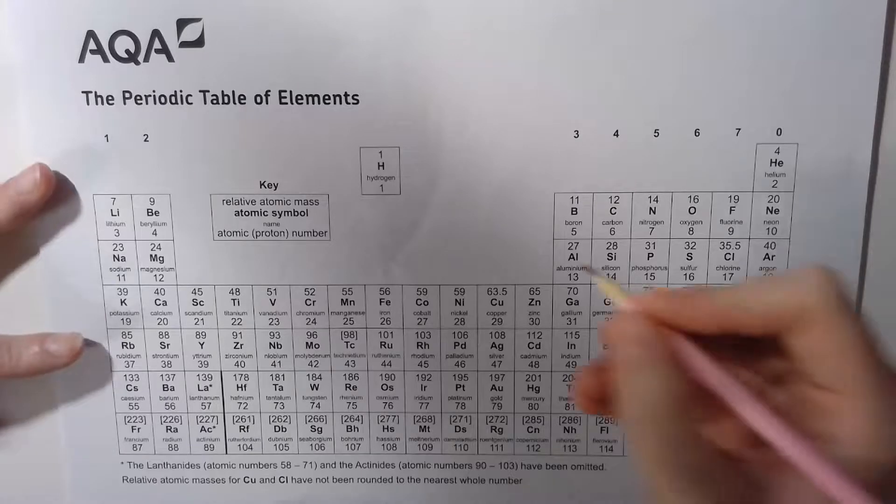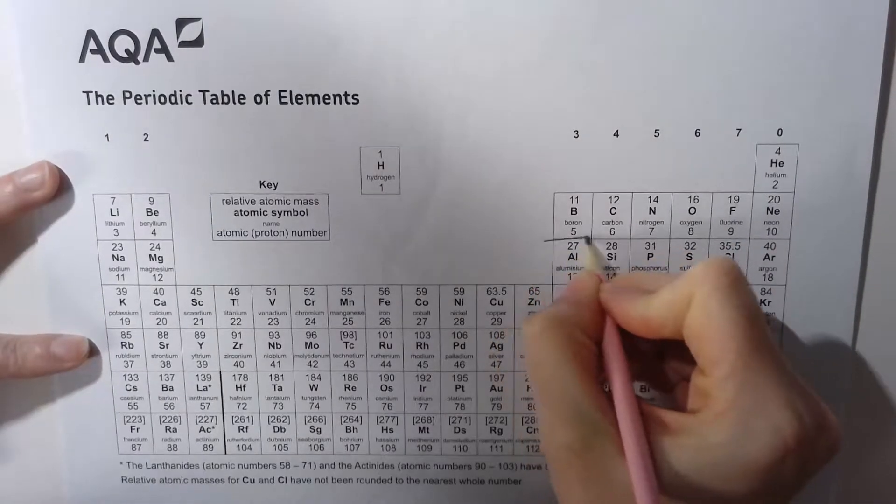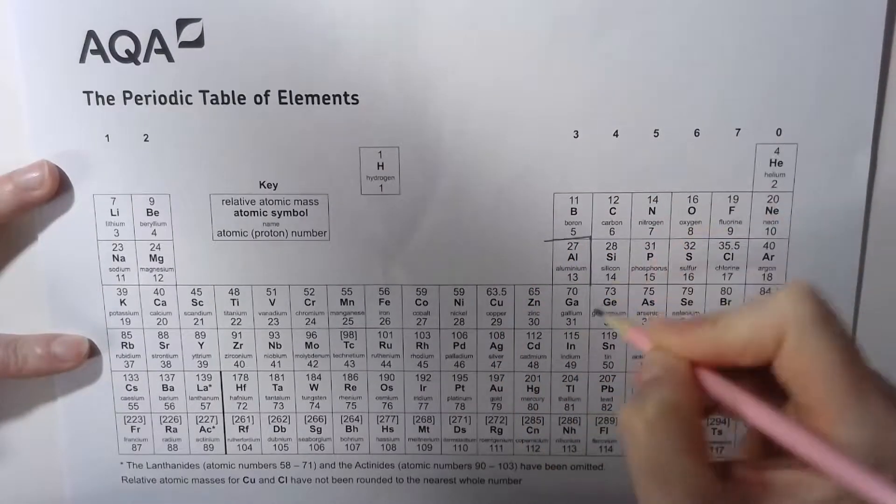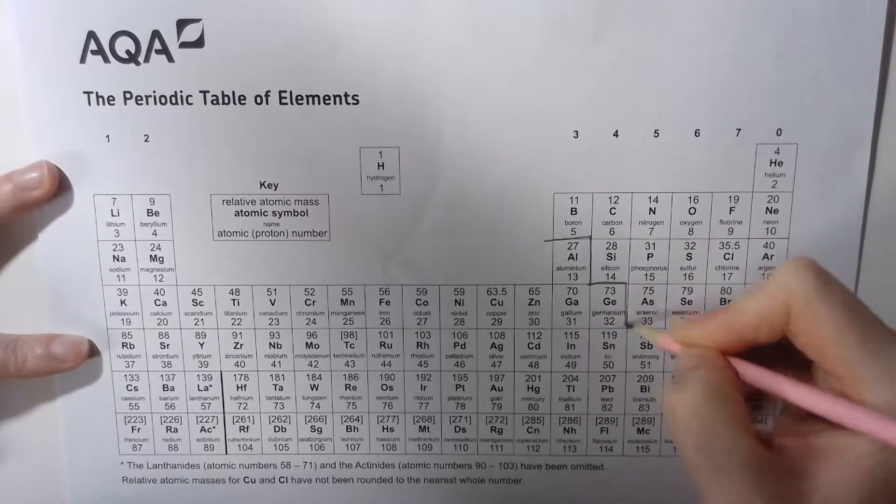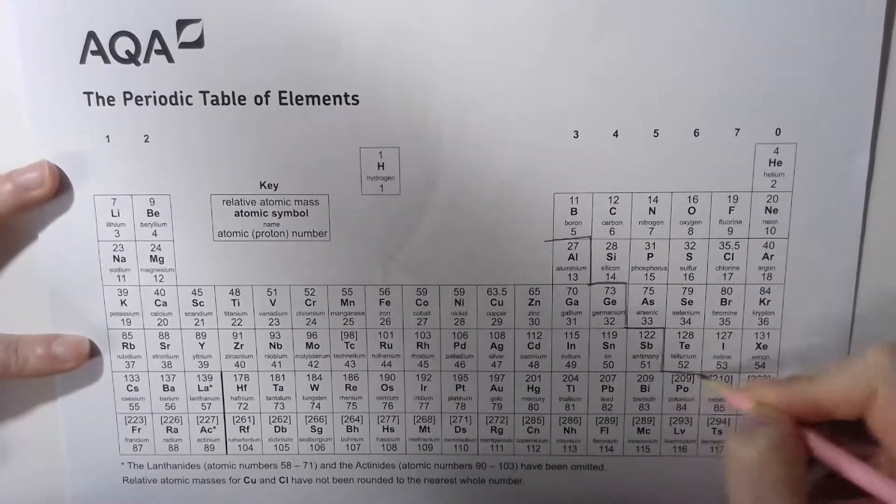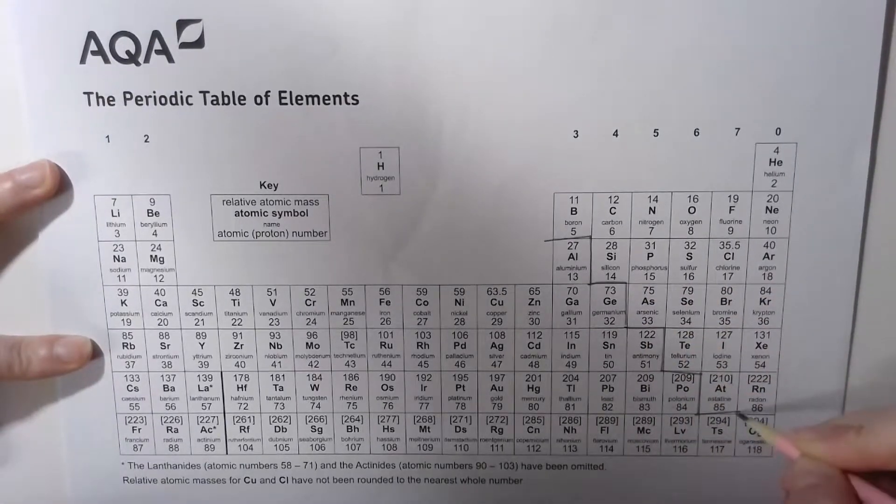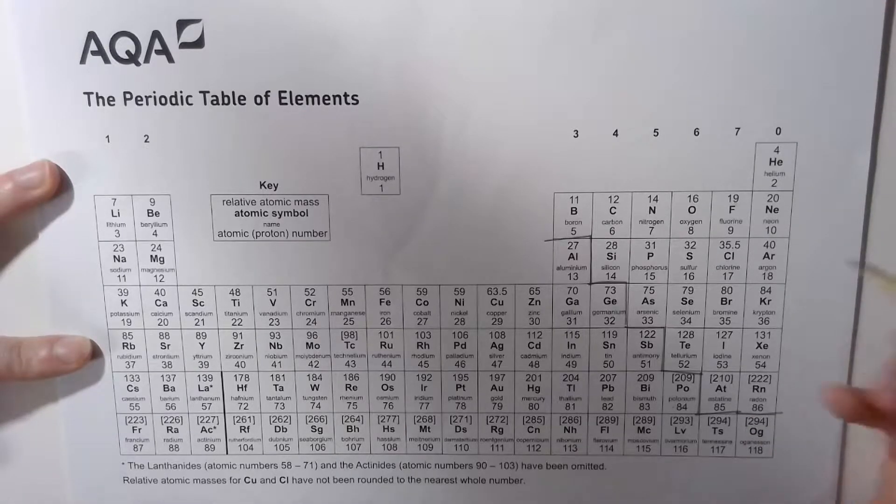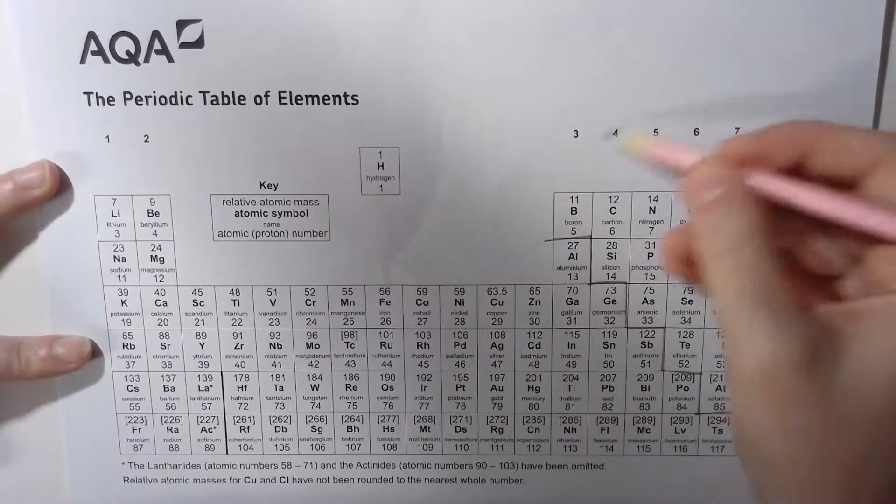The first thing I would do is draw the stairs, starting just above aluminium and following the stairs all the way down. This separates the metals and the nonmetals. This shows us that these elements on this side are nonmetal.